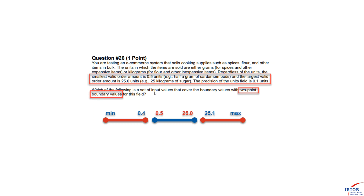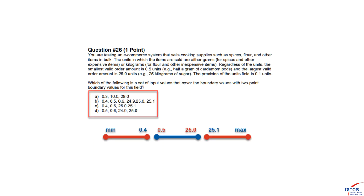First, we check what we are asked for, and we see that two-value boundaries is the way to go. The minimum and maximum values of a partition are its boundary values. We know that 0.5 and 25.0 are min and max for the valid partition. 0.4 is the max value for the first invalid partition — we can't define its min. Similarly, 25.1 is the min value for the second invalid partition and we can't define its max.